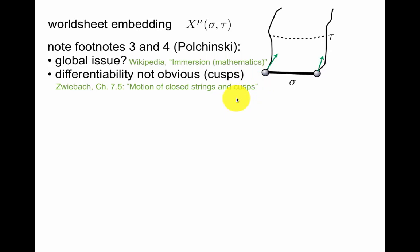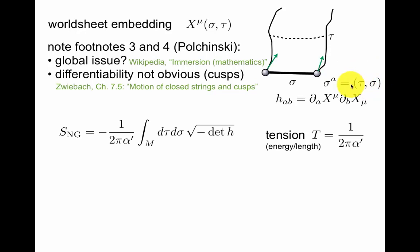The formation of cusps on, for example, closed strings, when a left-moving and a right-moving wave hit each other. You take these two coordinates, tau and sigma, a goes from 1 to 2, or 0 and 1 in this case, and you form an induced metric. So you differentiate the embedding function, X mu, with respect to these two variables, giving you a 2 by 2 matrix, 2 by 2 metric, on this world sheet. You should be familiar with the idea that the square root of the minus determinant of the metric, integrated over a volume, is the volume form. Here is an area, because it's in two dimensions.